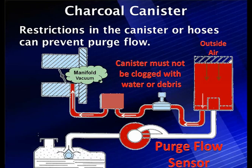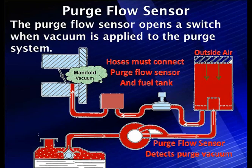For canister operation, restrictions in the canister or hoses can prevent normal flow, which might give us a code for low flow. The canister could be clogged because it's full of water or debris. This is something we see occasionally in flood situations where the canister has been underwater and it's fully saturated with water — very hard to pull the vapor through. You may even get misfire codes sometimes, so don't ignore that.